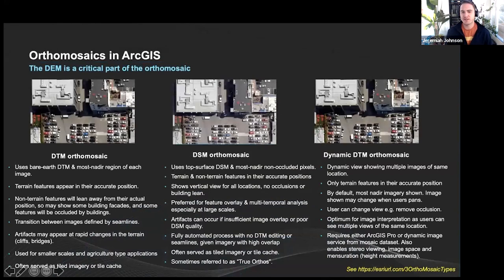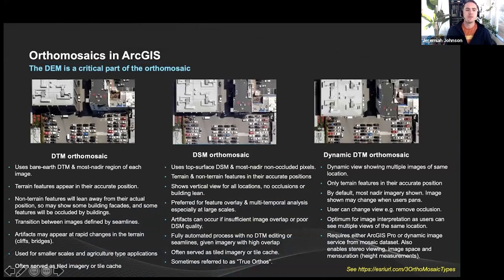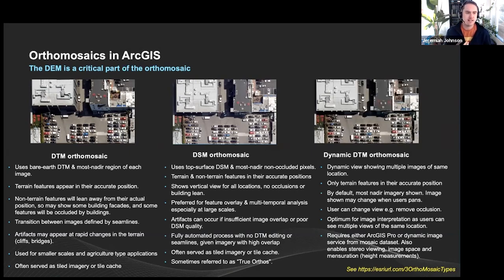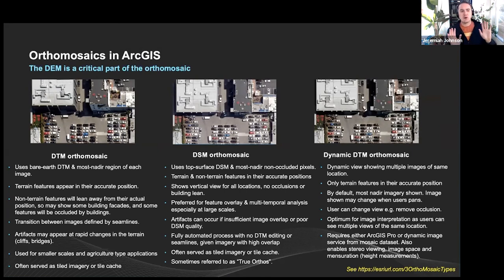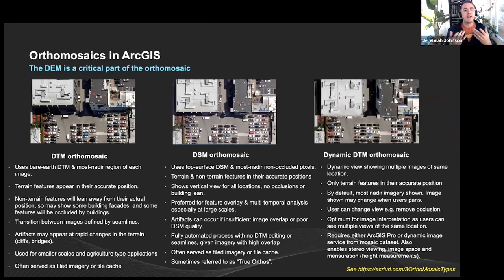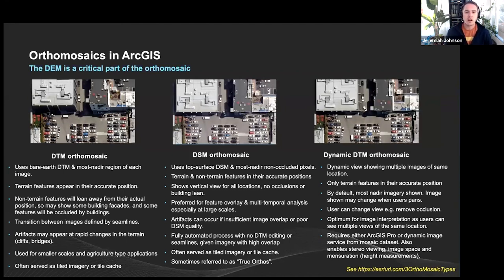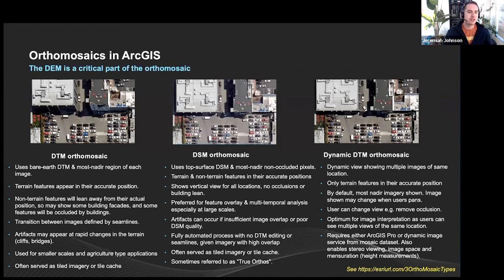When we talk about the data products that drones create, the majority are orthomosaics. The first type is a DTM orthomosaic, which uses the barest DTM and the most nadir region of each image. However, non-terrain features will start to lean away from their actual position — things on the ground would be very accurate, but elevated features like buildings will lean away from nadir. This is a quick way to produce basemap imagery, but not ideal for elevated structures.